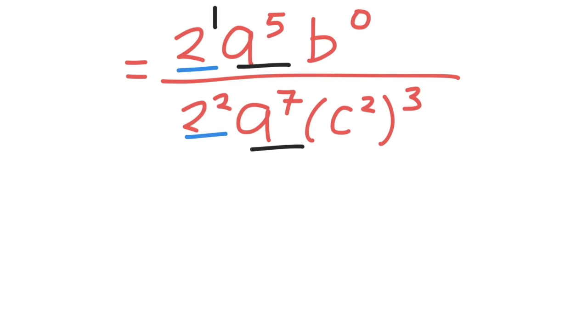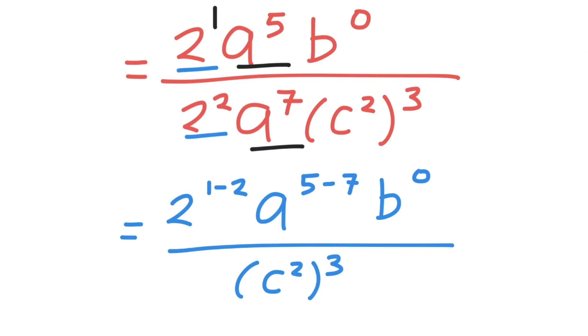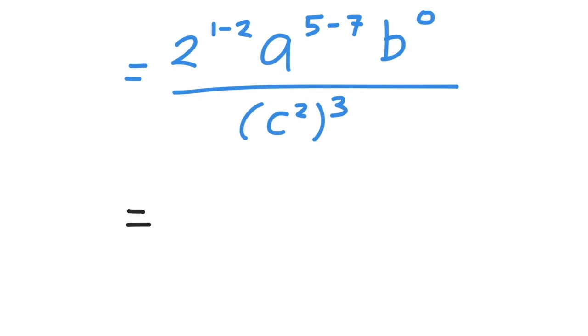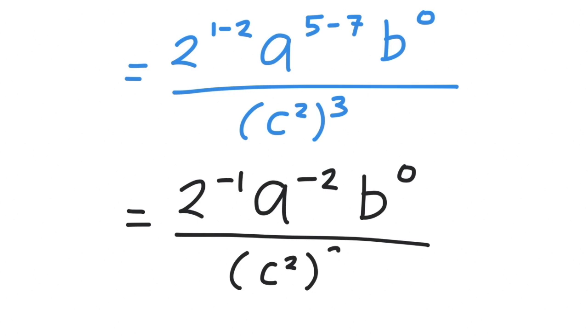To simplify this division, we will use the division rule, and this gives us 2 to the power of 1 minus 2 times a to the power of 5 minus 7 times b to the power of 0 over c squared to the power of 3. This becomes 2 to the power of negative 1 times a to the power of negative 2 times b to the power of 0 over c squared to the power of 3.